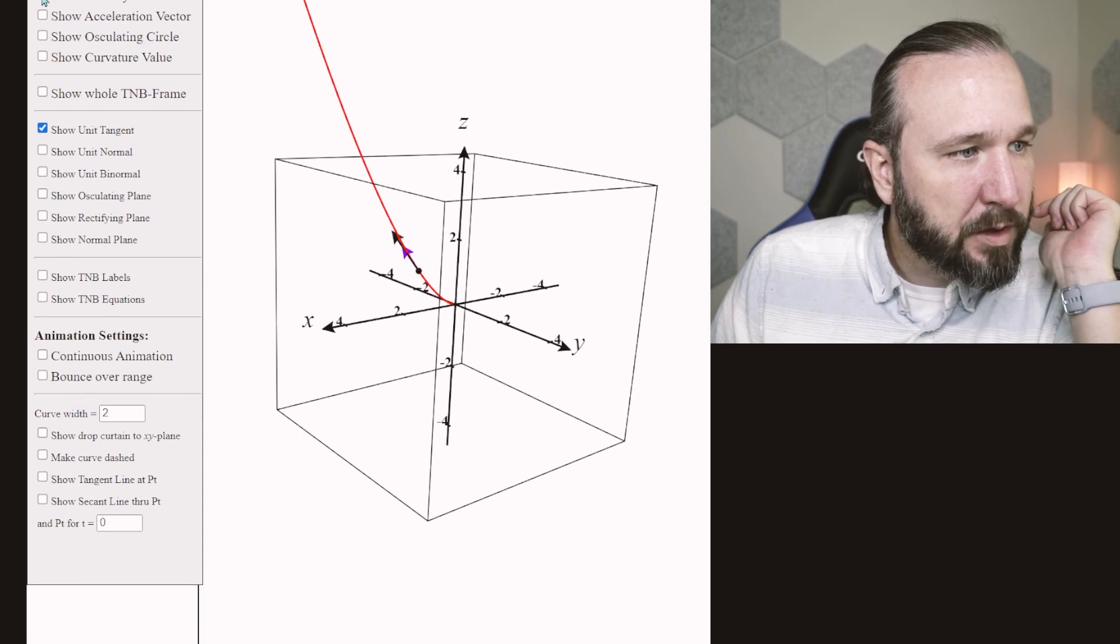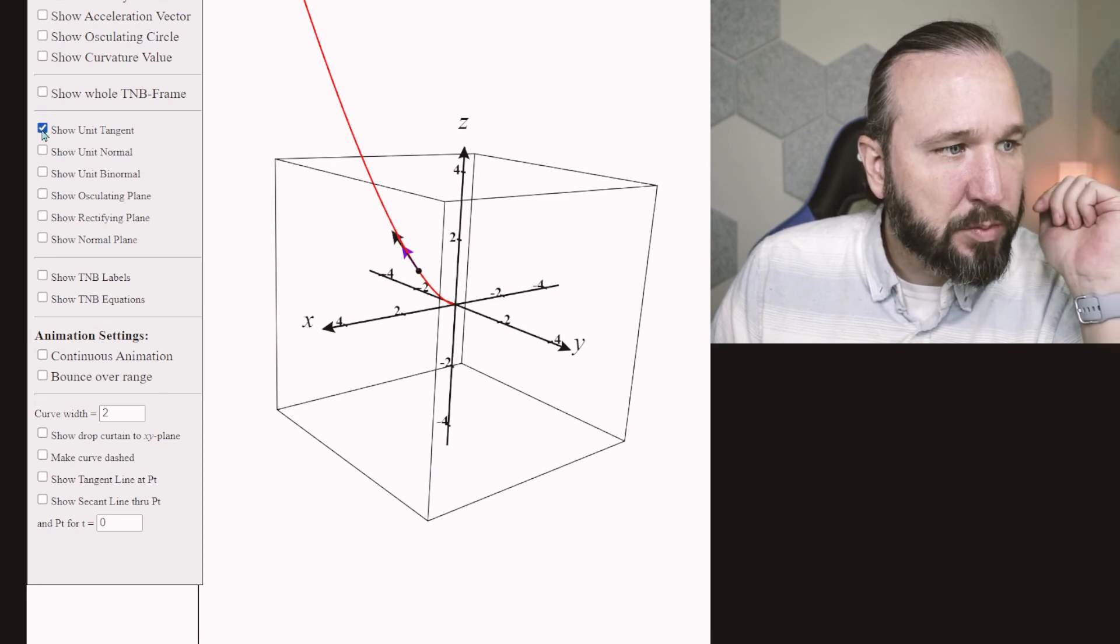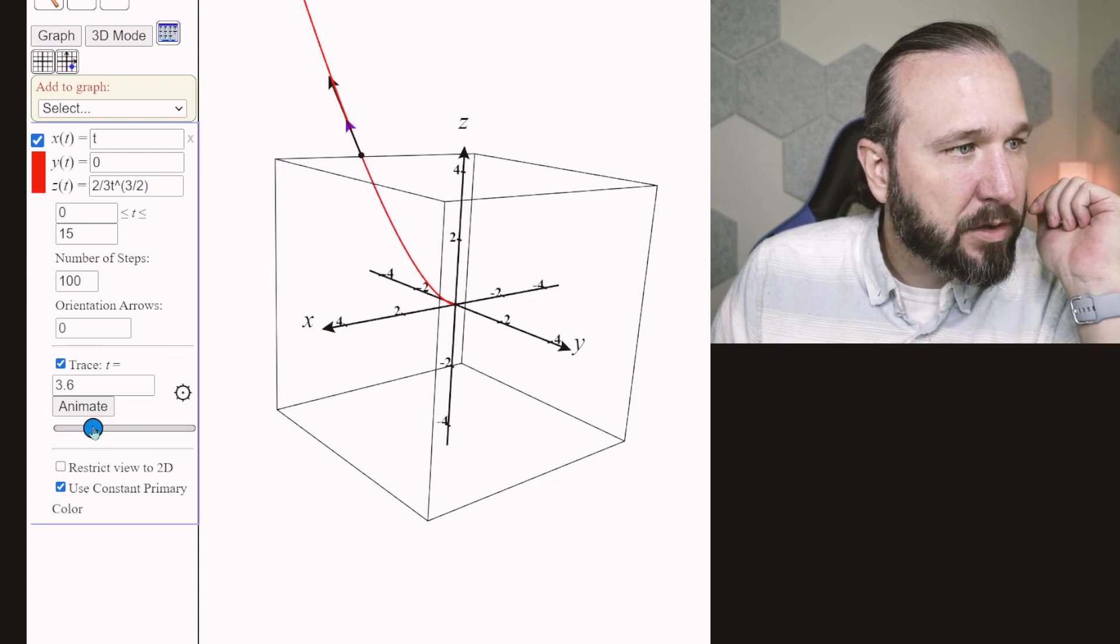So you click the little cog and then so right now I'm having it graph the trace point. So that's r of t the position of the particle. And then also the velocity vector. That's the long black vector. You can see it is going in the direction that the particle is moving. And then also that purple one there that is the unit tangent vector.